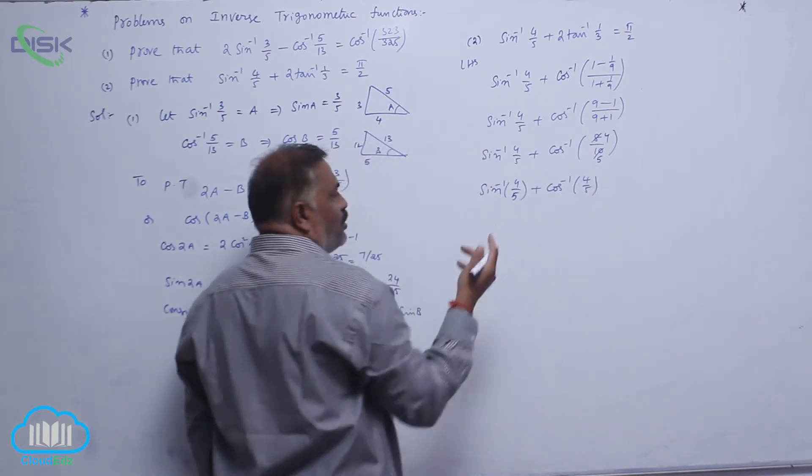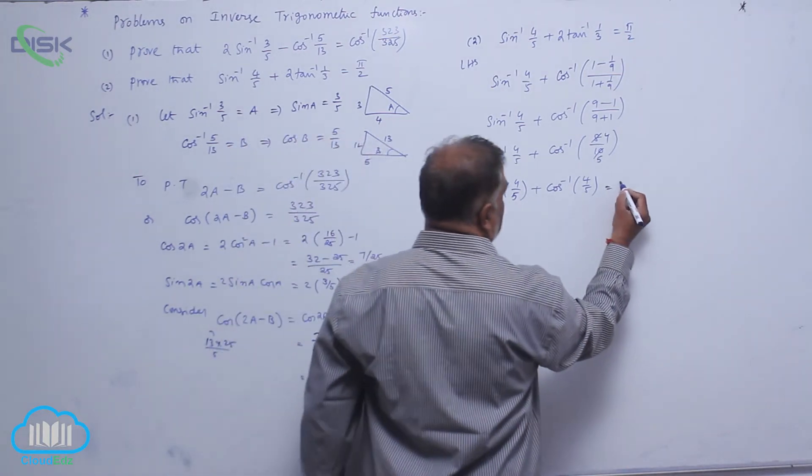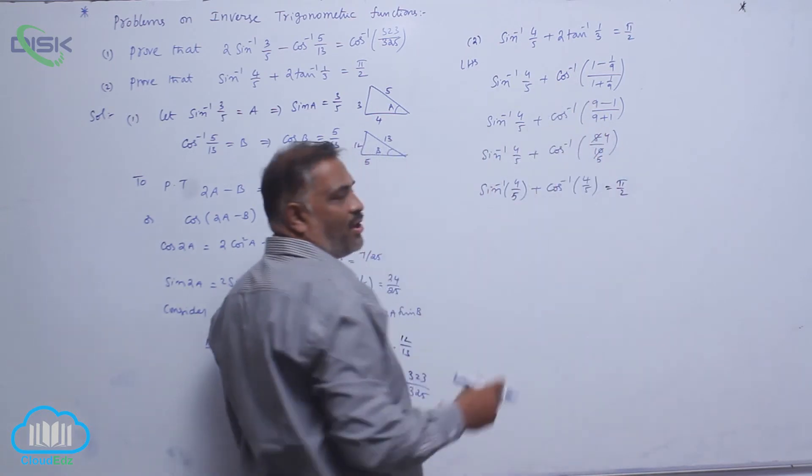Now, you know that sin inverse x plus cos inverse x is equal to pi by 2. So, this is pi by 2, that is your RHS answer.